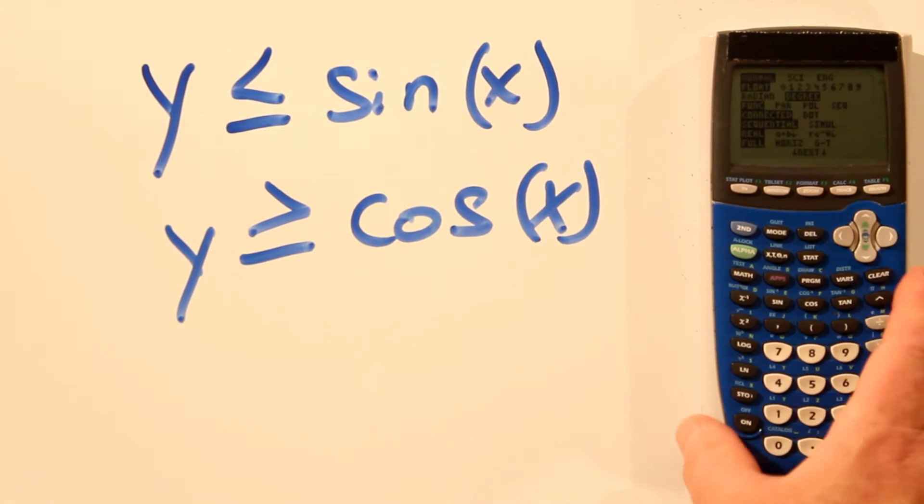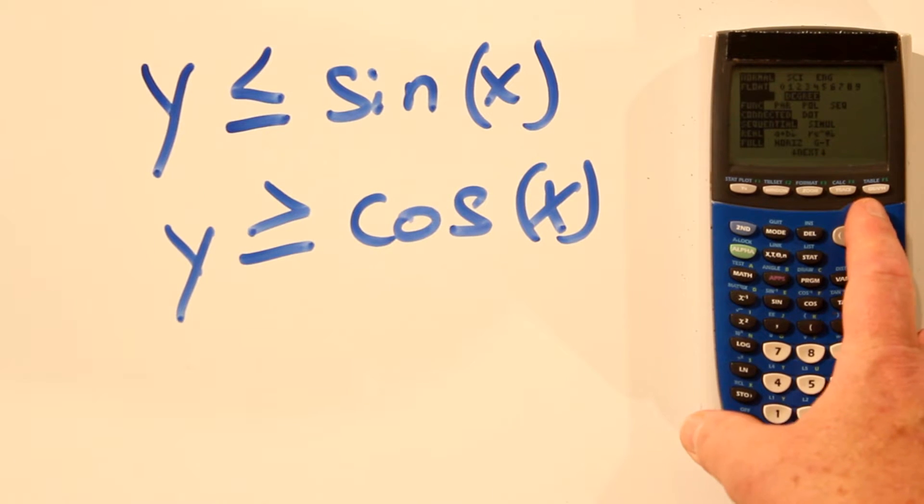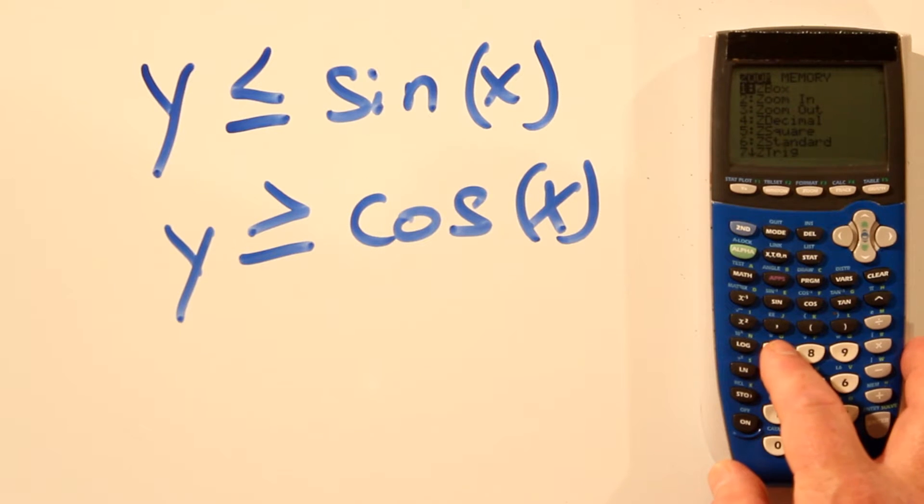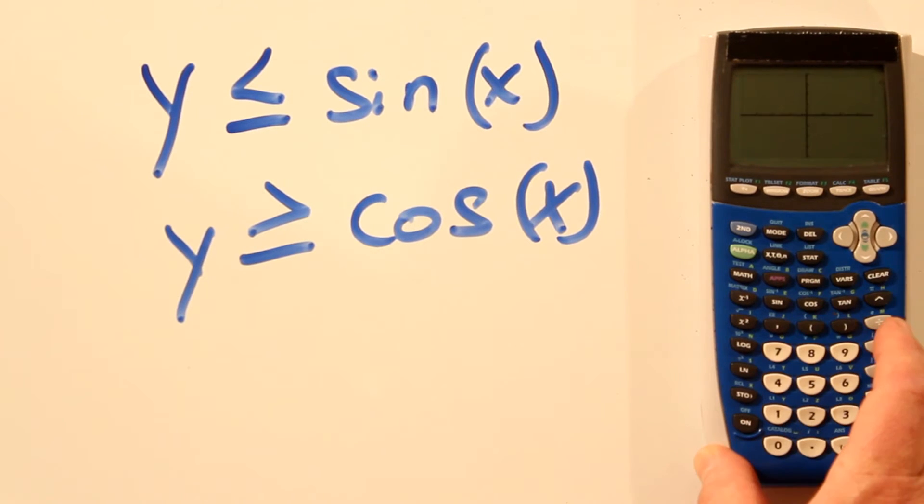By hitting the mode button and we're in degrees, third line down. It could be in radians or degrees. Then we'll hit our zoom button and make sure we're in zoom trig, number 7, for trig functions.